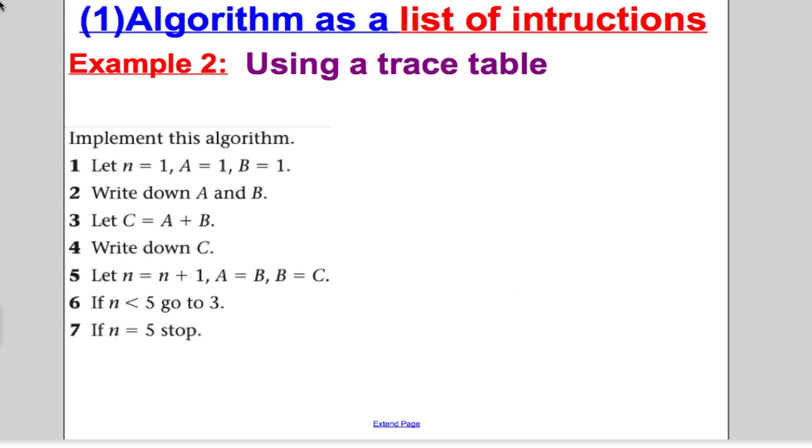Let's take a look at another one, slightly harder. It's using what's called a trace table. Sometimes we need to keep track of the various inputs we're putting into our algorithm at each stage, and a trace table allows us to do this pretty easily. So we're going to implement the following algorithm. It says, let N be one, A is one, B is one. Write down A and B. Let C be this. Write down C. Let N be this, and go on to N is five.